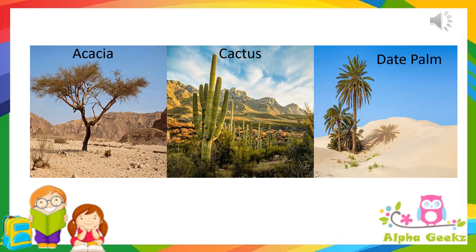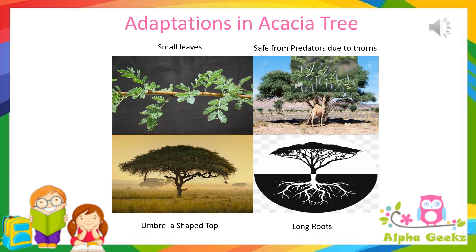Acacia, cactus, and date palms are some examples of plants growing in desert regions. Plants growing in desert regions have adapted themselves to either conserve whatever water they have, or they have found ways to prevent water loss.